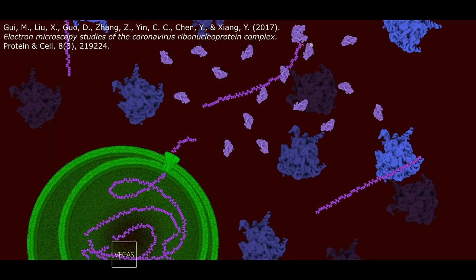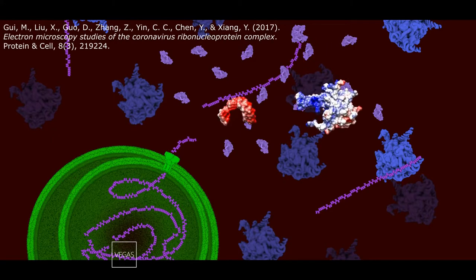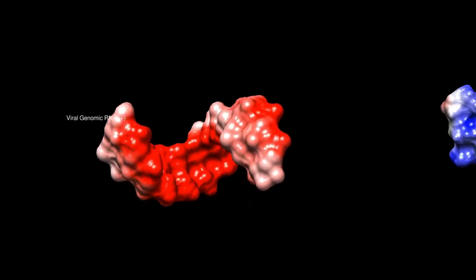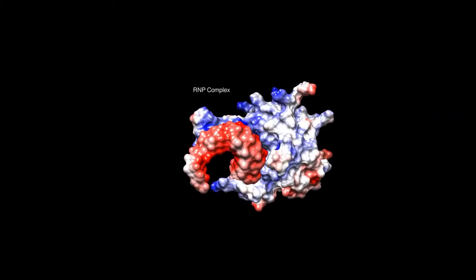In the cytosol, viral genomic RNA strands bind with the nucleocapsid protein, also known as the N-protein, to form a helical nucleocapsid structure in a mature virion, known as a ribonucleoprotein. This complex is then transported to the assembly area.